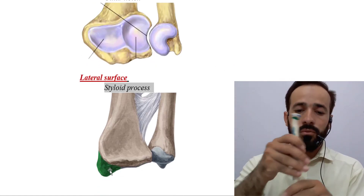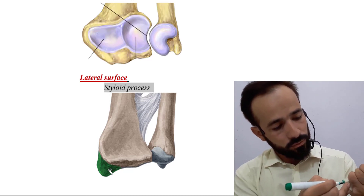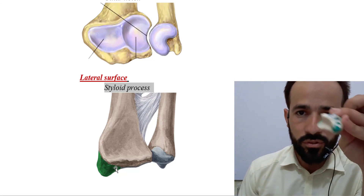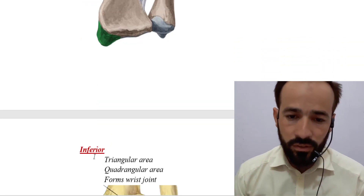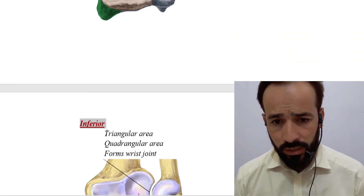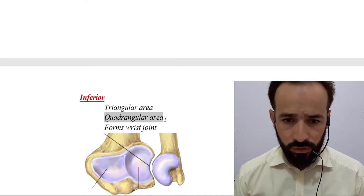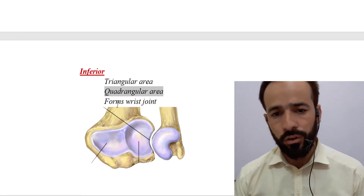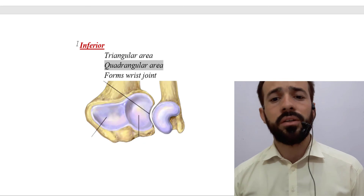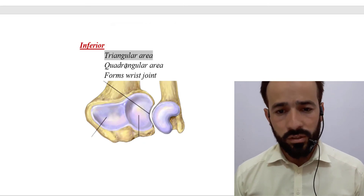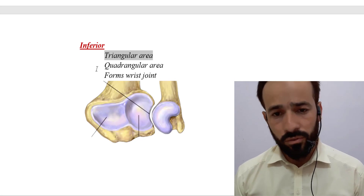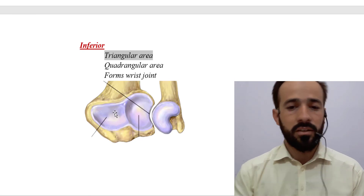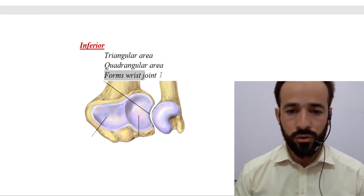The lateral surface of the lower end has the styloid process — a pointed projection highlighted here in green. The inferior surface is divided into two areas: the triangular area located medially and the quadrangular area located laterally, and together they form the wrist joint.